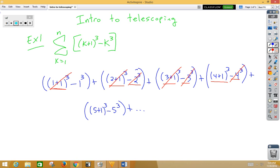Here we have 5 cubed and a negative 5 cubed, they would cross out. So notice that most of the terms tend to collapse on themselves. So if we think about a pirate telescope collapsing in and becoming smaller, that's where the term comes from.